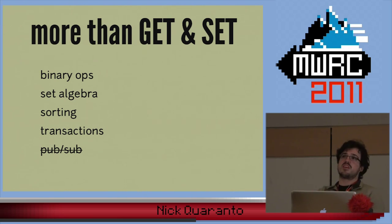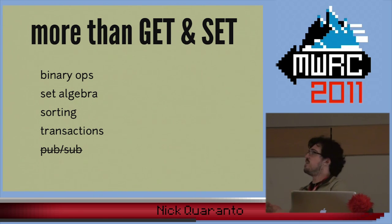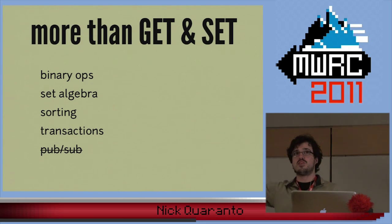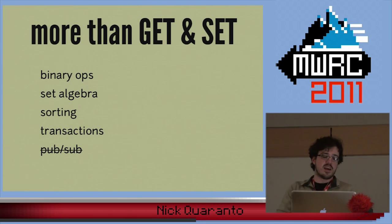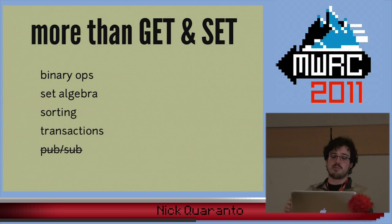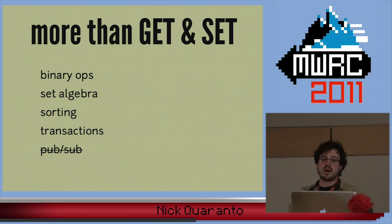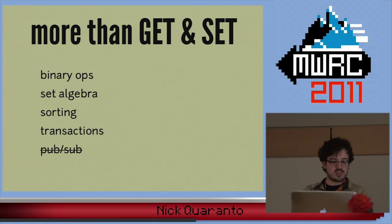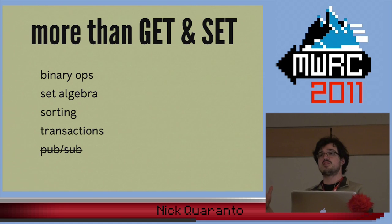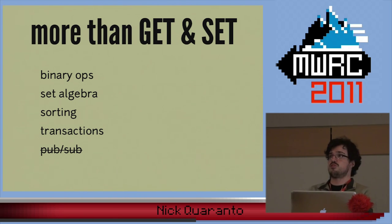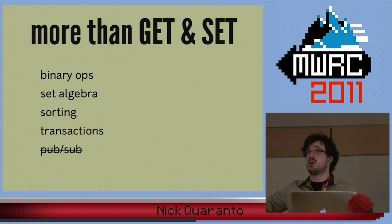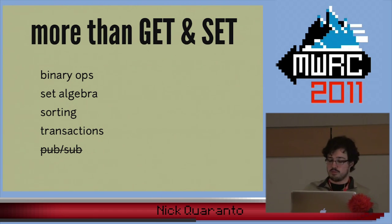Redis is a lot more than GET and SET, and that's kind of what I'm talking about today. I'm skimming over the basics of Redis and going to talk about some of the newer features: binary operations, which are new as of Redis 2.2, set algebra and what you can do with the Redis set datatypes, sorting, and transactions — which are also very poorly named.